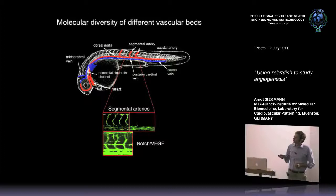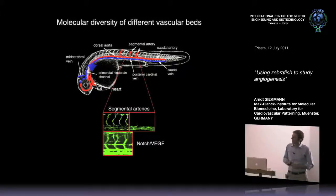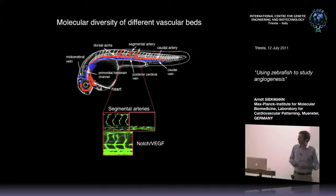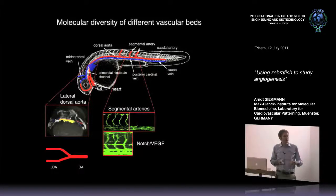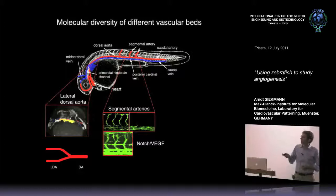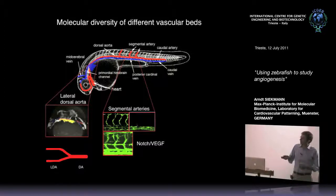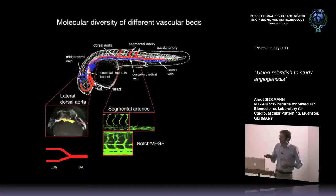That was the first part, introducing VEGF and Notch as key signaling components controlling segmental artery formation. We then asked whether other genetic signals play a role, or whether these are the two major players in every vascular bed. To understand this, we analyzed the formation of the first aorta in the embryo - the lateral dorsal aorta. In the embryo, as in mouse, there is an anterior bifurcated region and a single posterior dorsal aorta, and we wondered how this Y-shaped structure forms during embryogenesis.